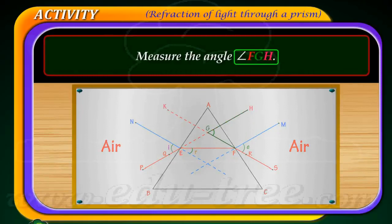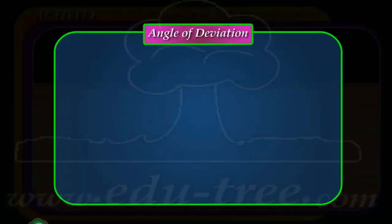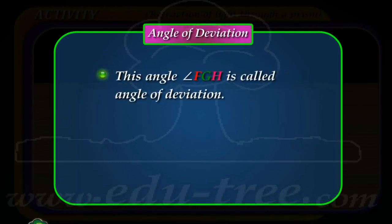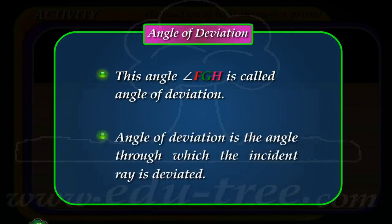Measure the angle F G H. This angle F G H is called the angle of deviation. The angle of deviation is the angle through which the incident ray is deviated.